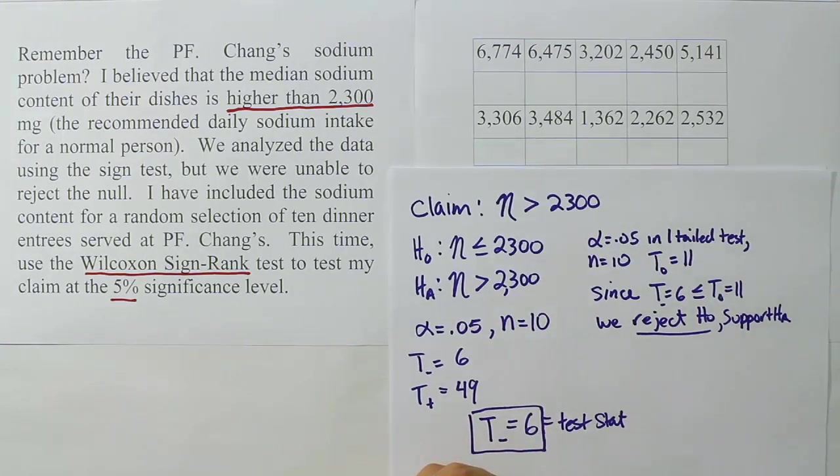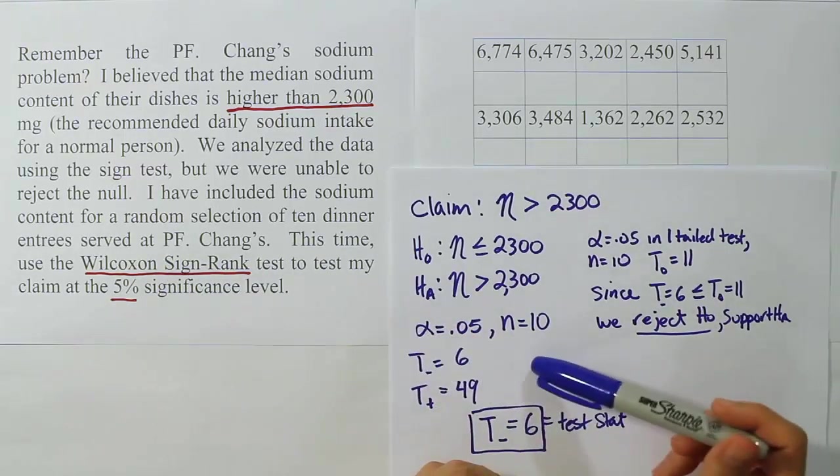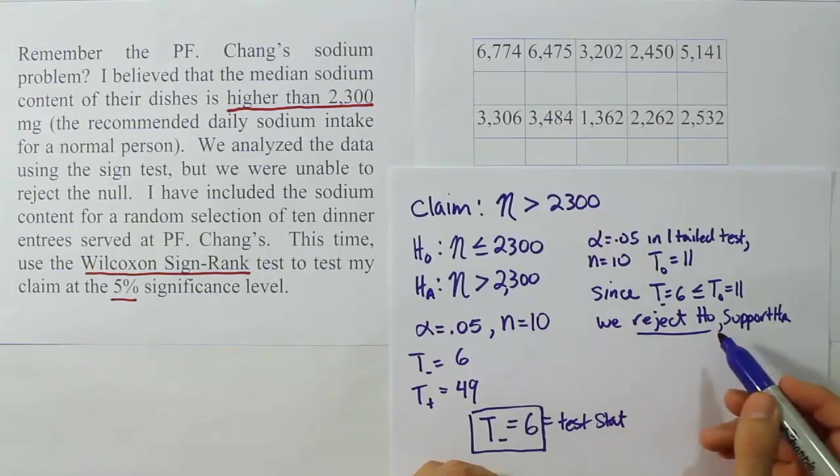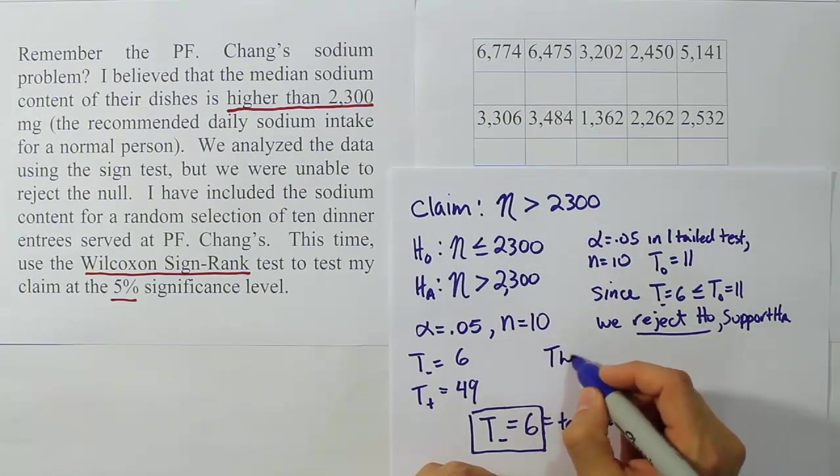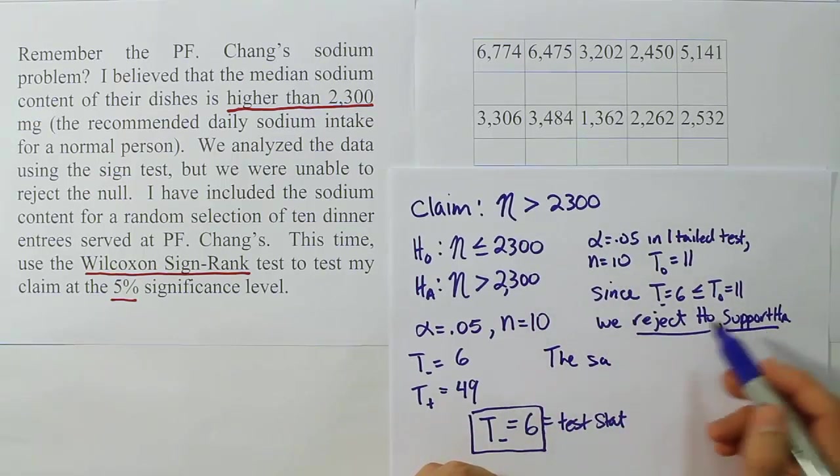So we spoke about this during the sign test. We had said that sometimes when the test has low power, it's unable to reject a null hypothesis that should be rejected. And now we see that when we use a procedure called the Wilcoxon signed-rank test, we're actually able to reject the null hypothesis like we wanted to. So we reject H_0, support H_A, that means we're going to say the sample data supports the claim, because our claim is the same as H_A.